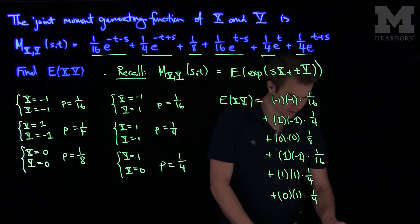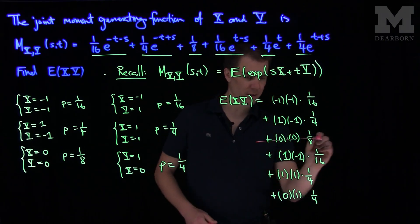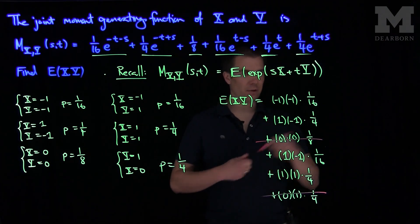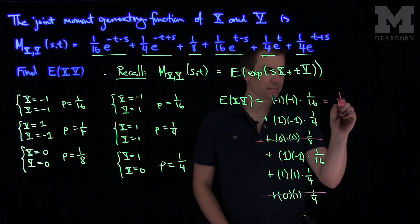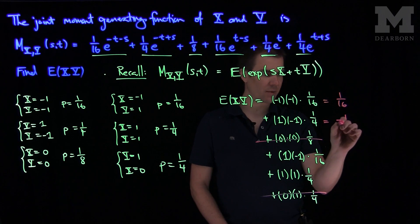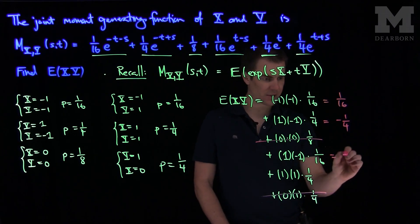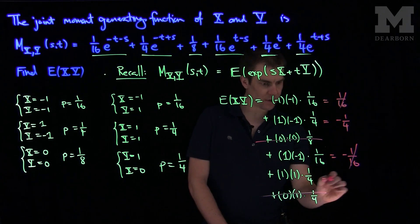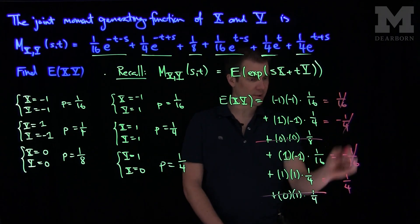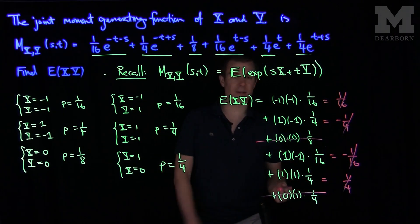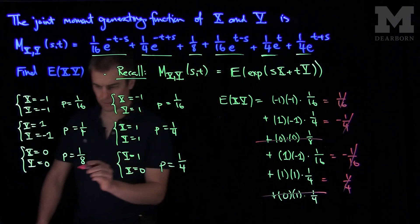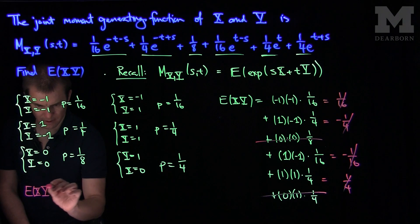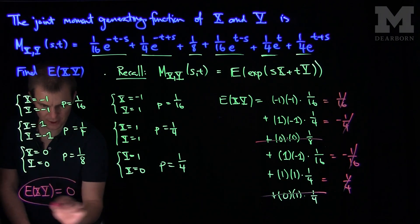We can cancel out some of these terms. The 0 times 0 term and the 0 times 1 term both vanish. The first remaining term gives us 1 over 16, the next gives negative 1 over 4, and the negative 1 times 1 term gives negative 1 over 16 — so those two cancel. The positive 1 times 1 term gives positive 1 quarter, which cancels with the negative 1 over 4. So the expected value of x times y, computed directly from first principles, is equal to 0.